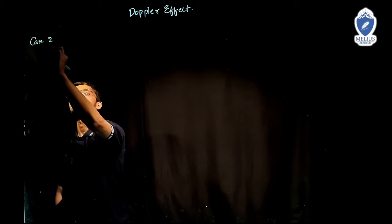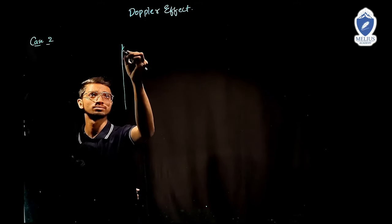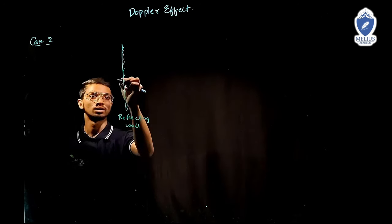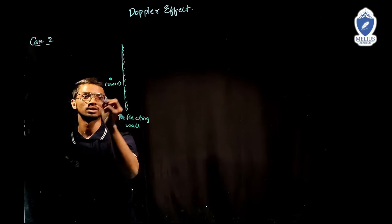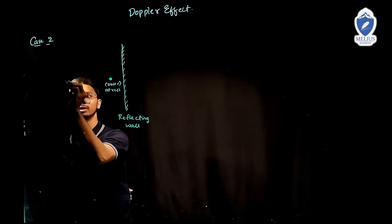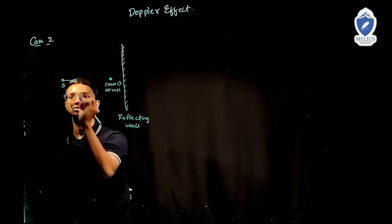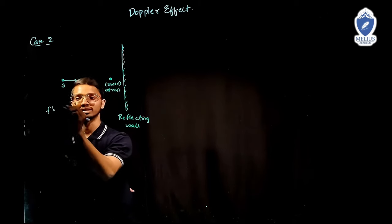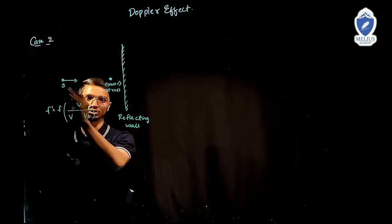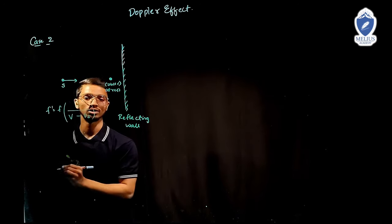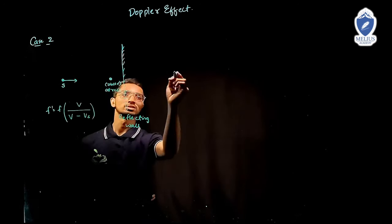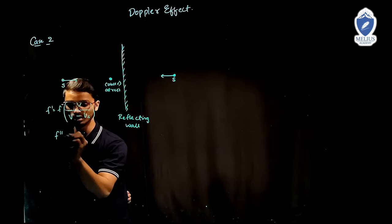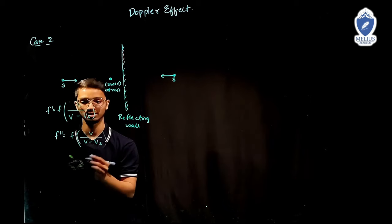Case 2: there is a rigid reflecting wall. The observer is standing at rest on one side, and the source is coming from the other side towards the observer. F' = F × V / (V − V_S) since source is coming towards the observer. If we make the mirror image of this, the image source is also coming towards the observer. Therefore F'' = F × V / (V − V_S) — both are the same.